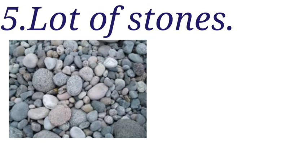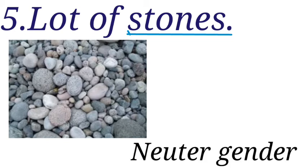Listen to this sentence: A lot of stones. Stones is the neuter gender. Non-living things that cannot grow or live are neuter gender. Common gender, feminine gender and masculine gender differ from this neuter gender.